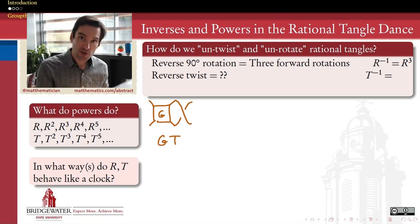that rotation movement that we did in the rational tangle dance had a fairly straightforward way to undo. In order to undo a 90 degree rotation, we just need to do the same 90 degree rotation three times. Rotate by 270 is the same as rotate by minus 90.